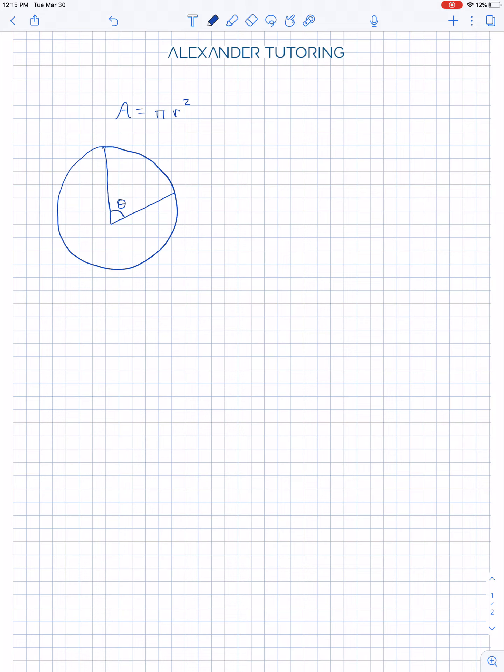So what we're basically going to say is the area of the total area of a full circle divided by the number of degrees to get around a full circle, which is 360.